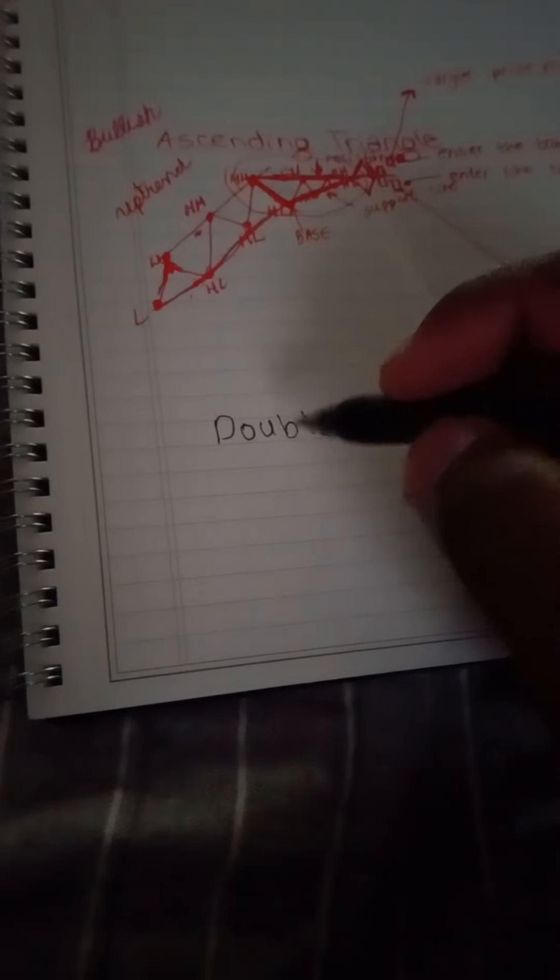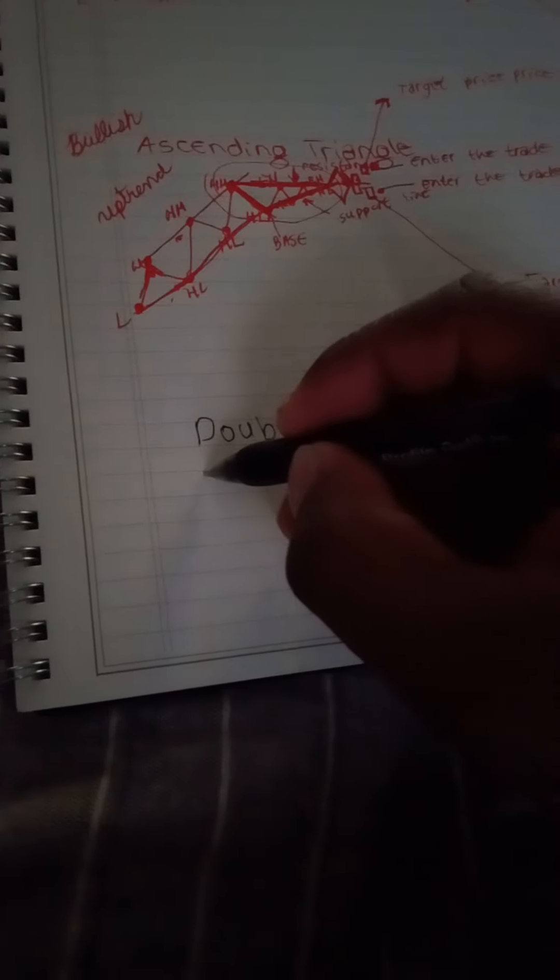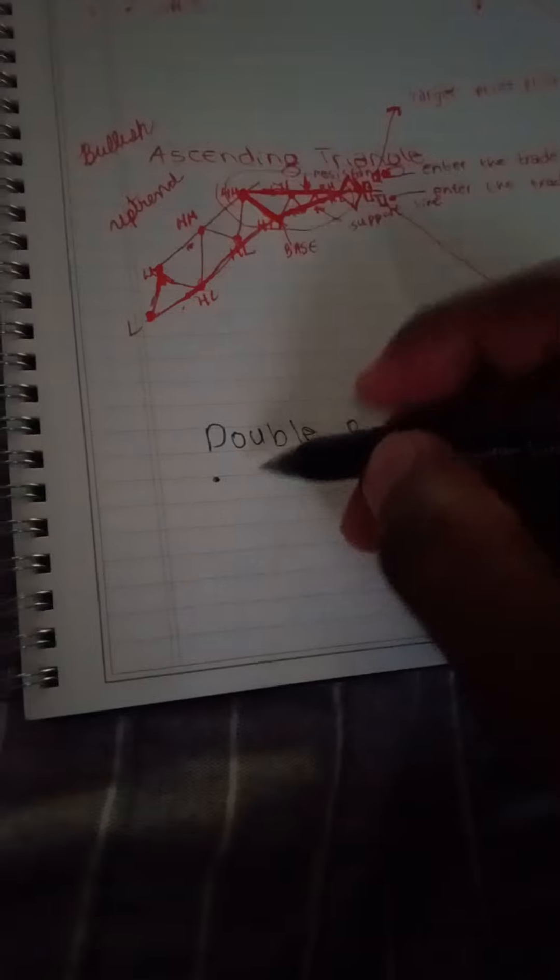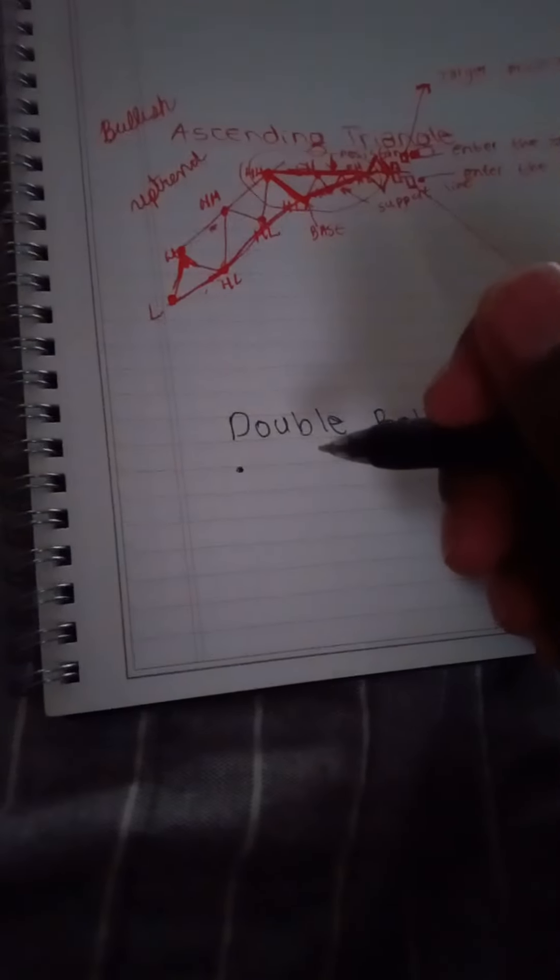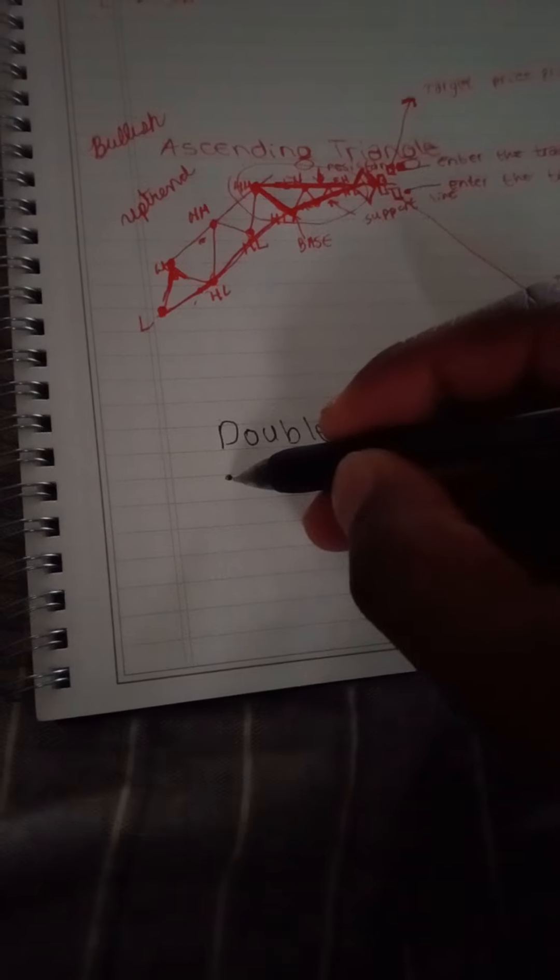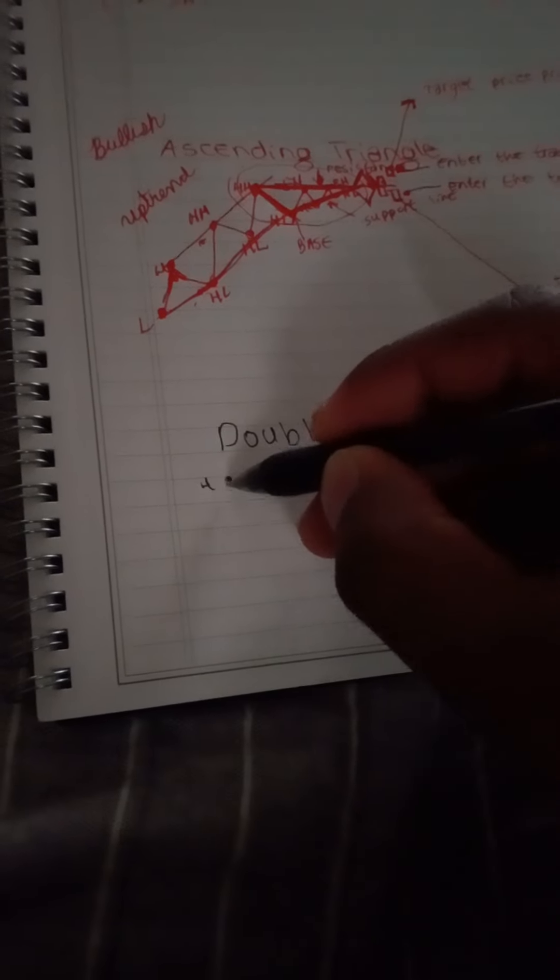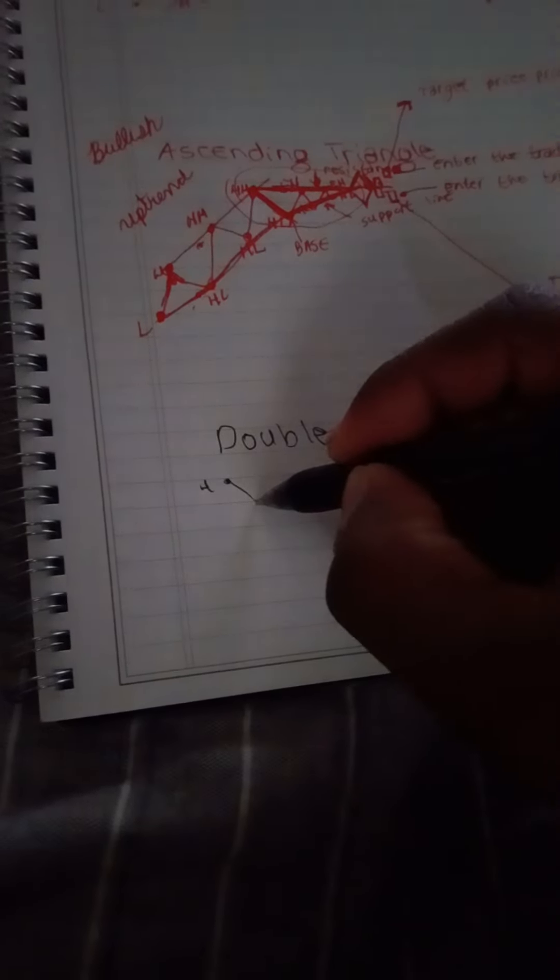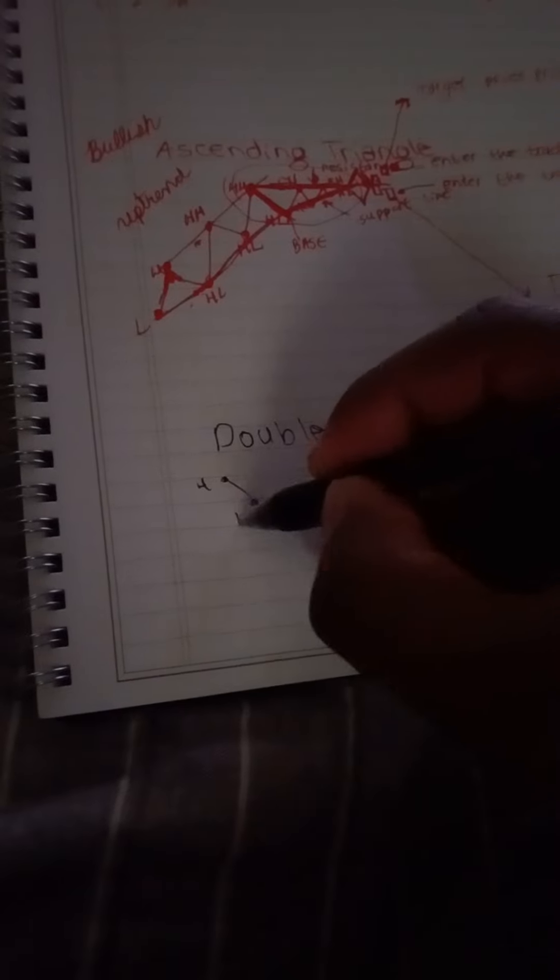You have an initial downtrend, which is represented by a series of lower levels. You have lower highs and lower lows.